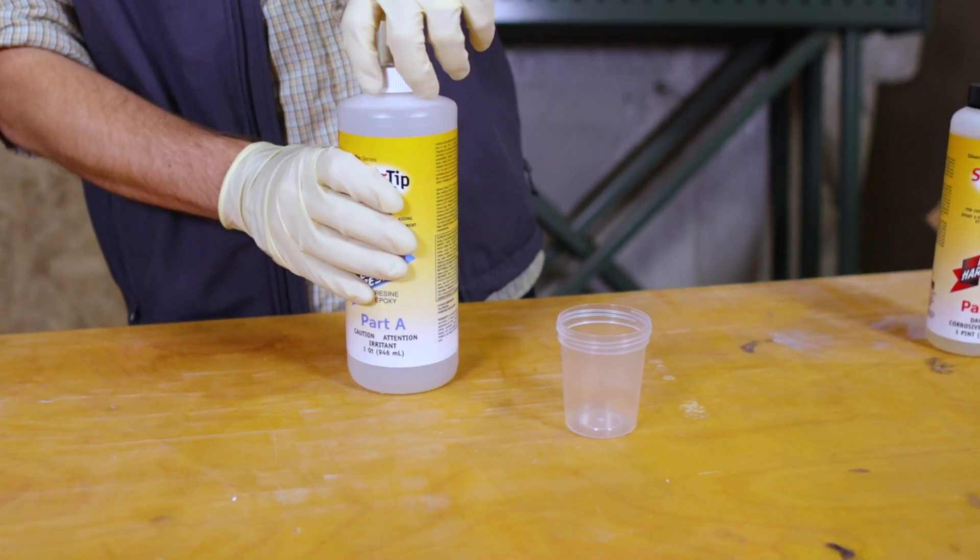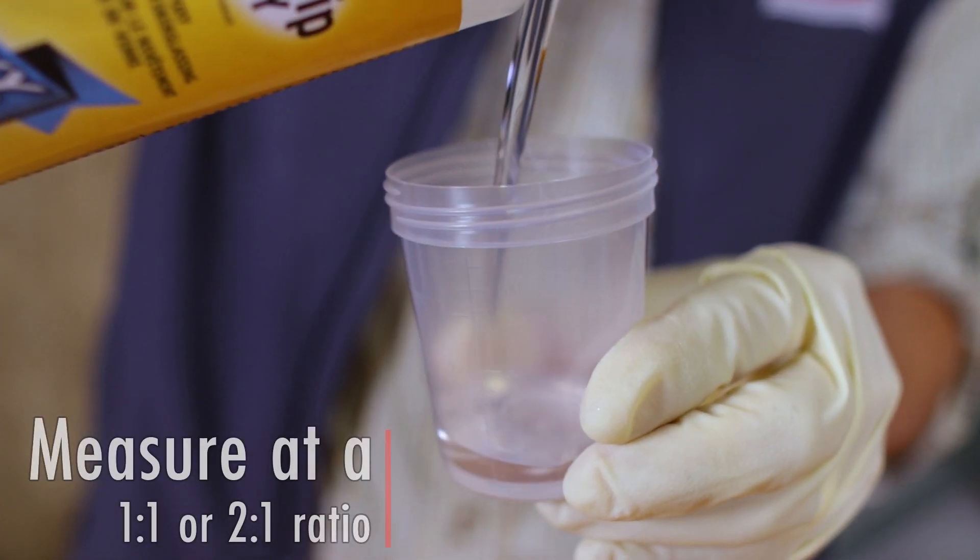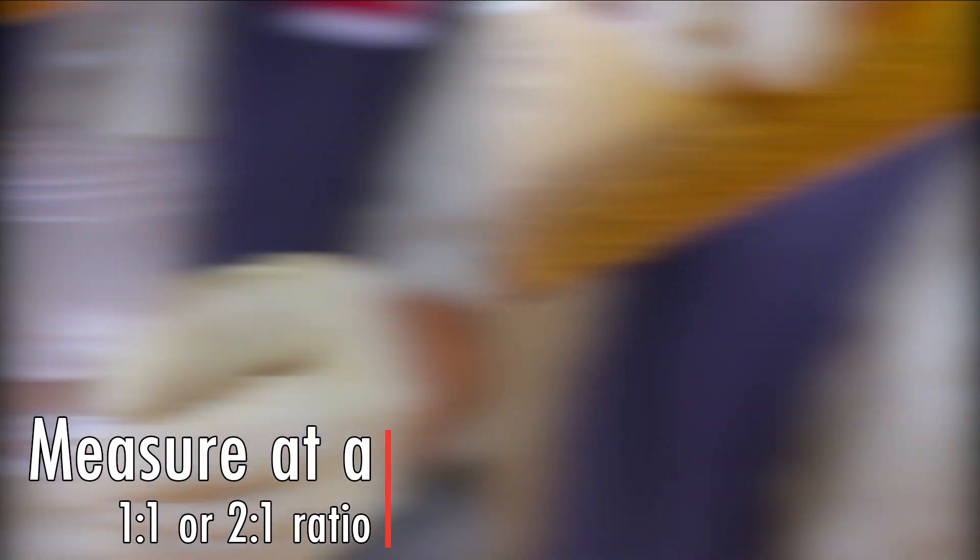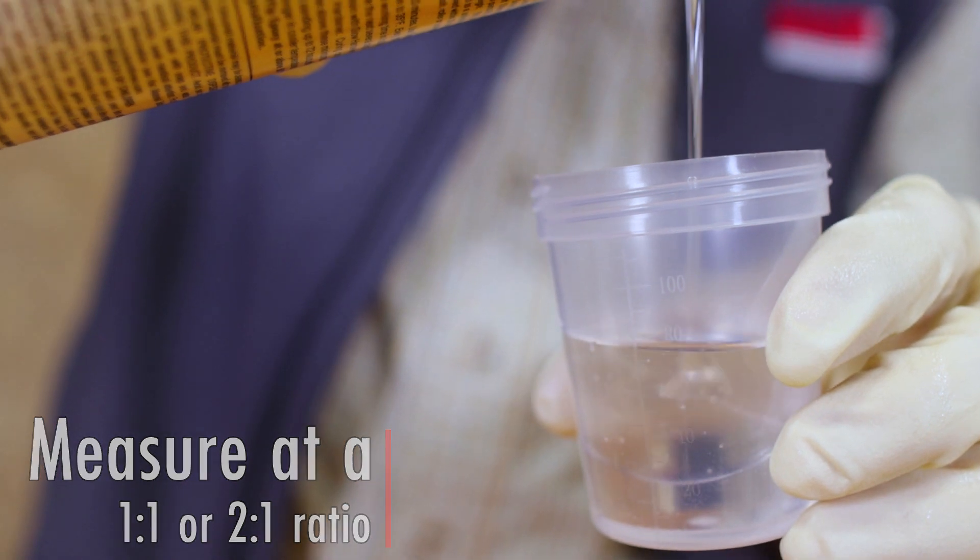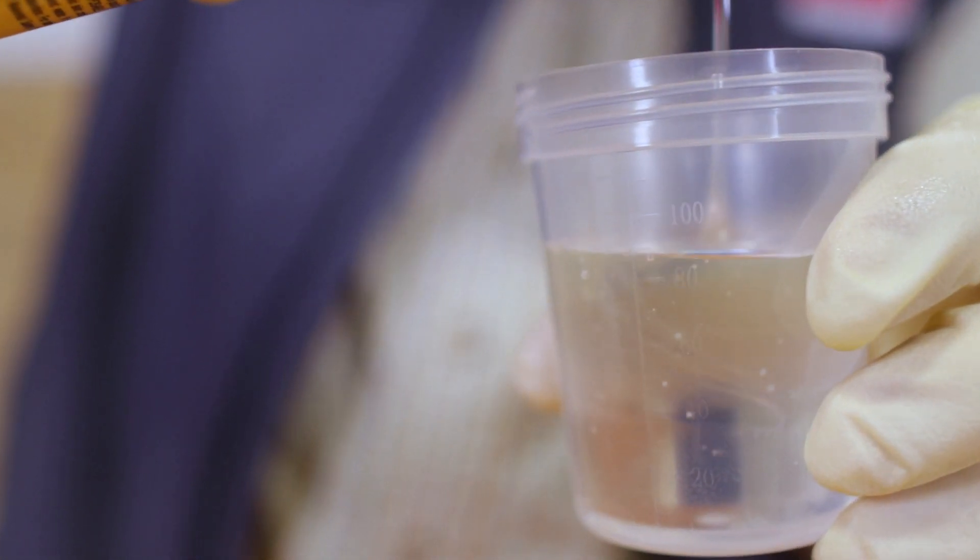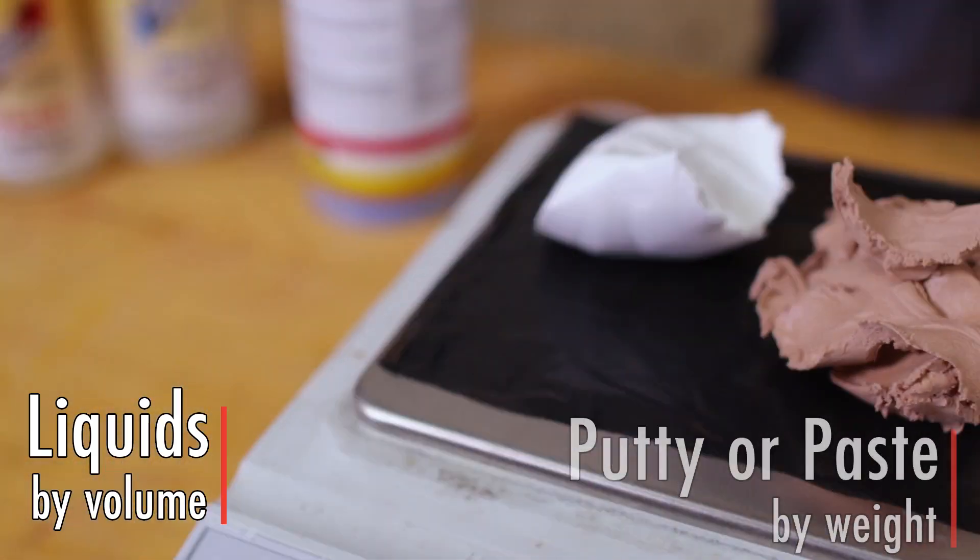For the most part, our epoxy adhesives and coatings measure at a 1-to-1 or 2-to-1 ratio. Next, consider if the product is a liquid or a putty. We recommend measuring liquids by volume using graduated measuring cups and putties or pastes by weight.